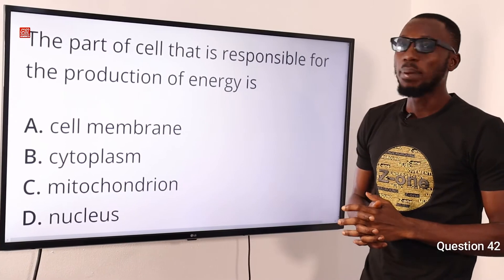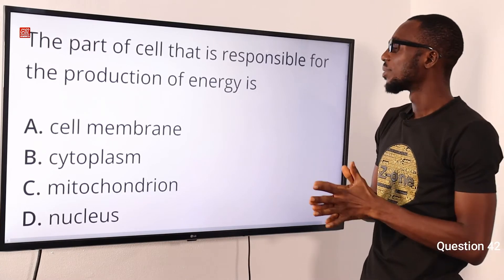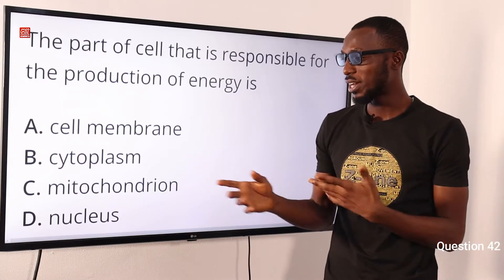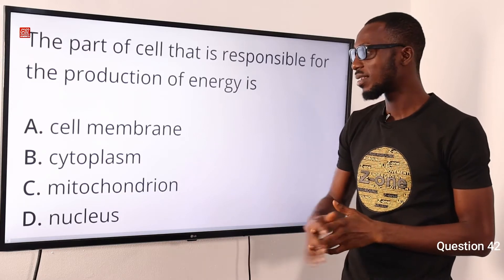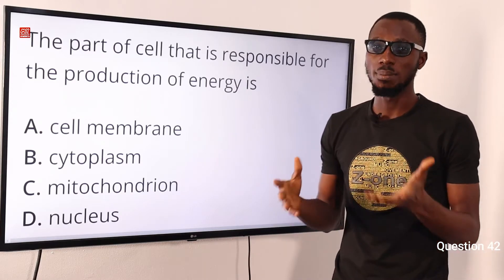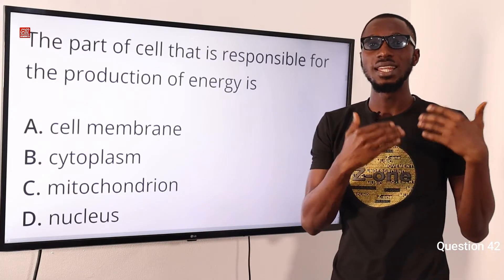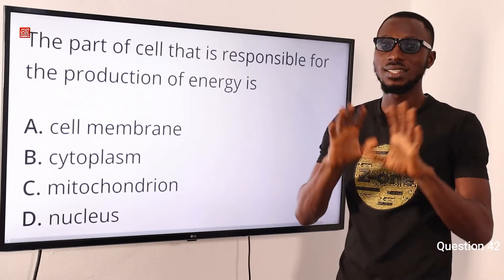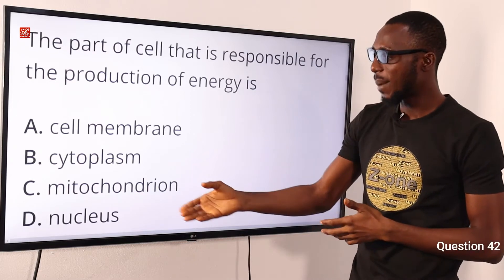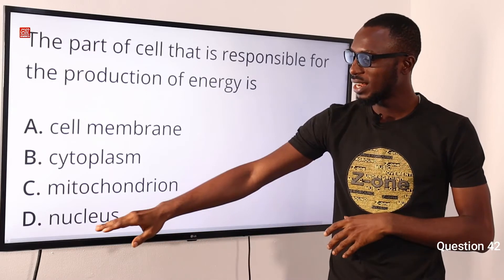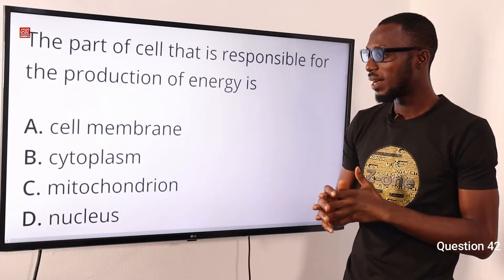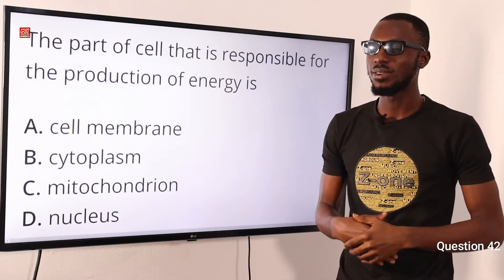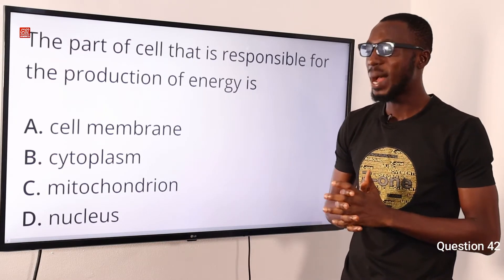Question 42. The part of the cell that is responsible for the production of energy is the mitochondria. The cell membrane, also referred to as the cytoplasmic or plasma membrane, separates the interior of the cell from its environment. Cytoplasm is the gelatinous liquid that fills the inside of the cell. Mitochondria is also referred to as the powerhouse of the cell. The nucleus is the site where genetic information and materials are stored and it controls the activities of the cell. So the correct option is option C for mitochondria.